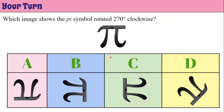Now it's your turn. I would like you to determine which image shows the pi symbol rotated 270 degrees. You have four choices below. Please pause the video now and come back when you're ready to check your work.